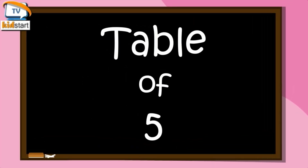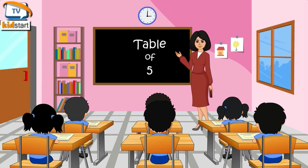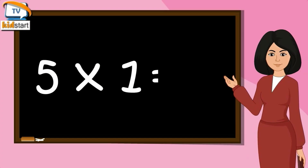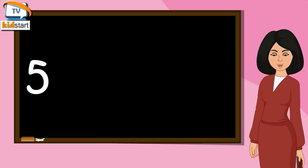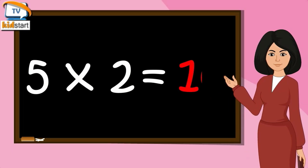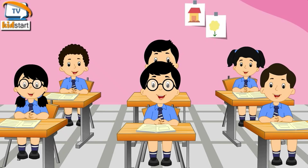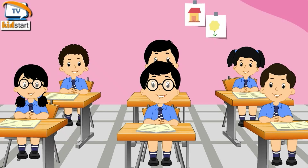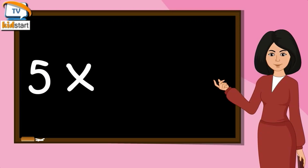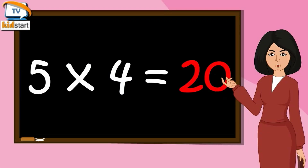Table of Five. Five ones are five. Five twos are ten. Five threes are fifteen. Five fours are twenty.